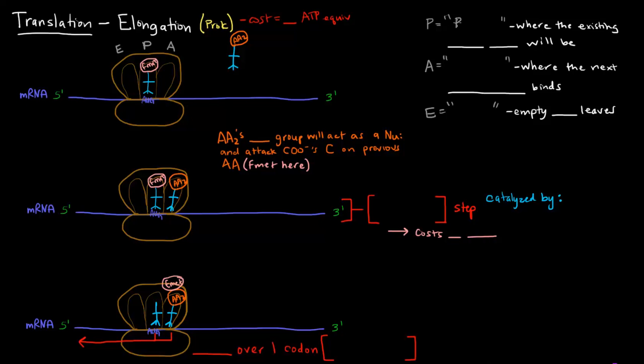The P site stands for peptidyl. The reason that's important is because the peptidyl site is where the existing peptide chain will be. Initially, the peptide chain isn't even a chain - it's just one amino acid.